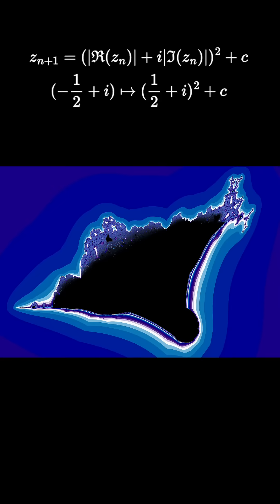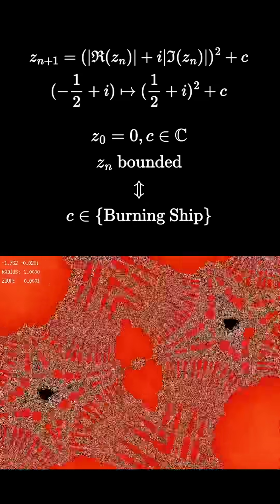The fractal is generated in the complex plane using this recursion. z sub n plus 1 equals the absolute value of the components of z sub n squared plus c. You let z sub 0 equal 0 and let c be some complex number, and c is in the burning ship if and only if the sequence of z sub n generated by the recursion stays bounded.